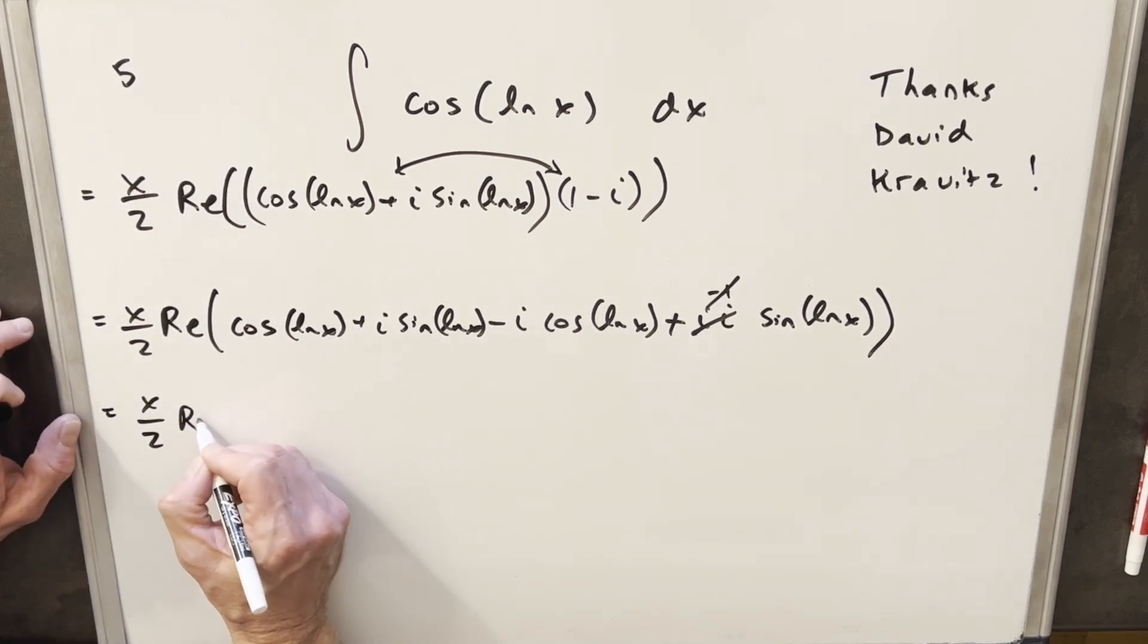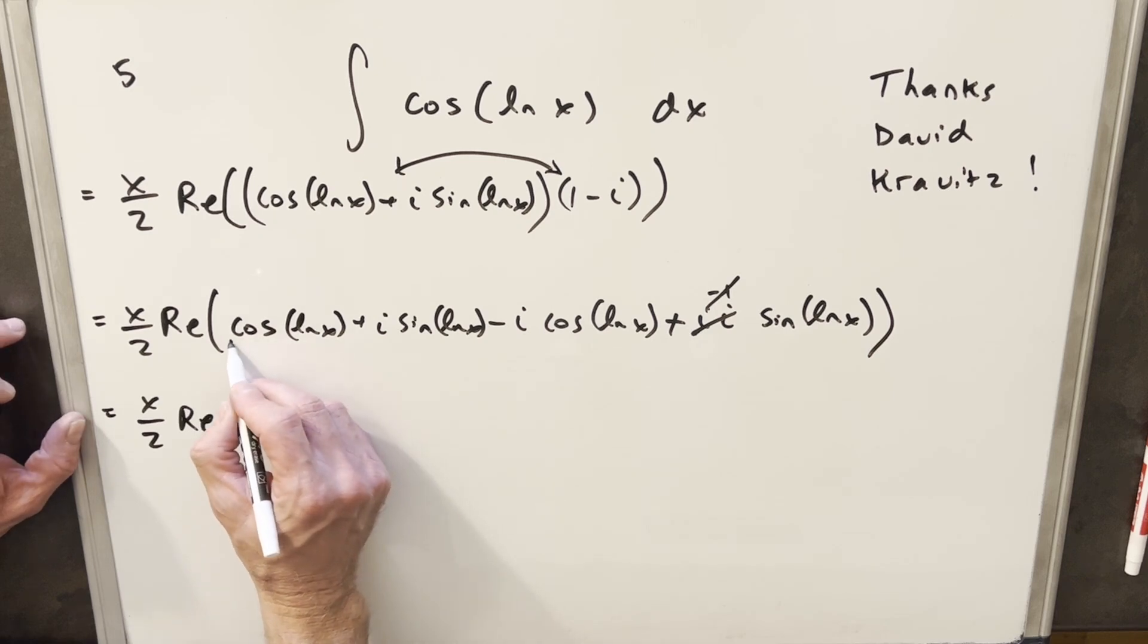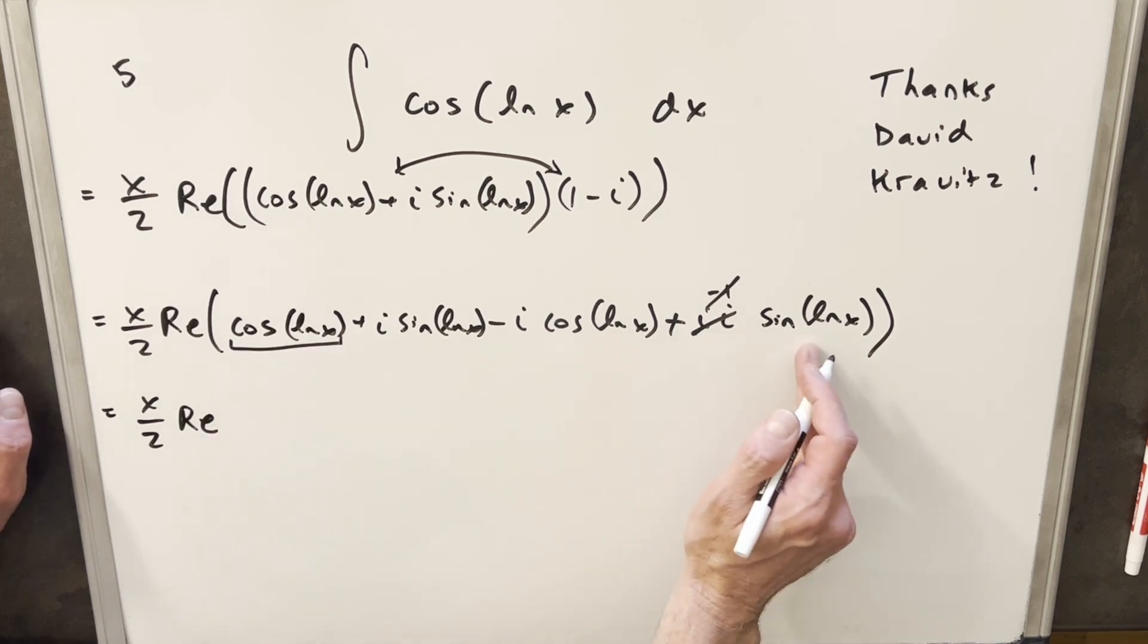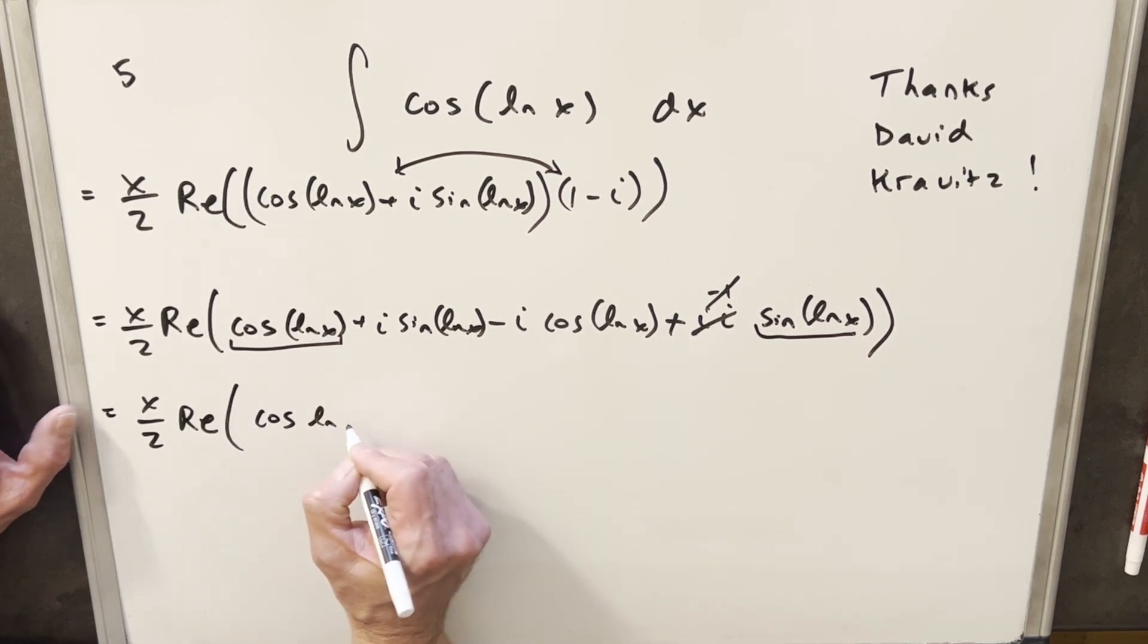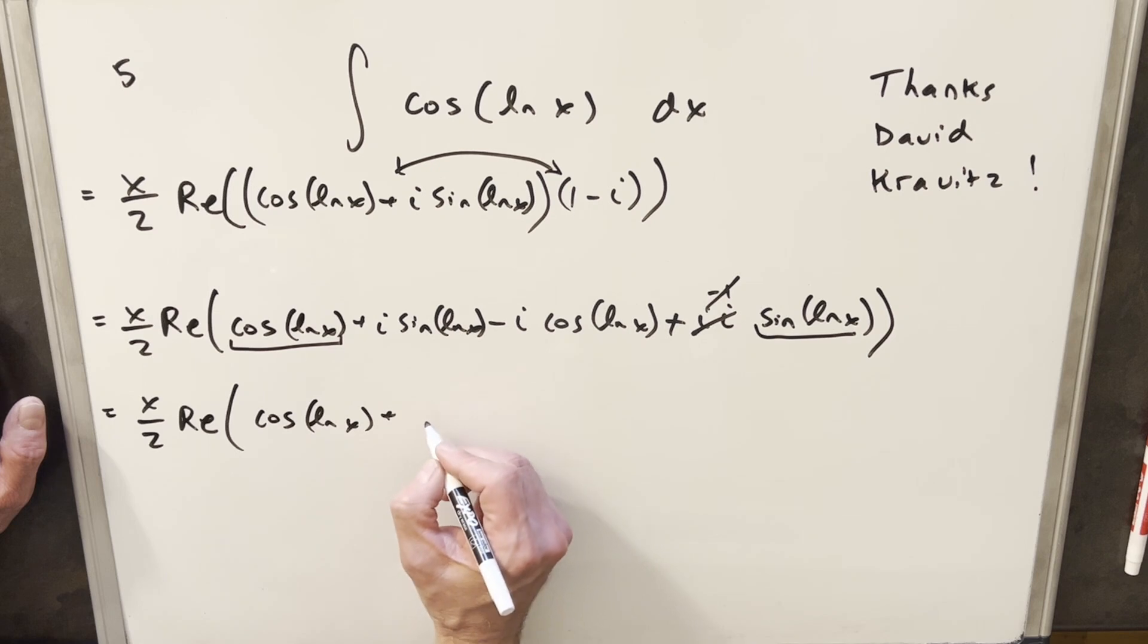So let's just do this. We have our x over 2 in front. Then grouping all of our real terms, we have cosine ln x. This is just sine ln x here. So we have cosine ln x plus sine ln x.